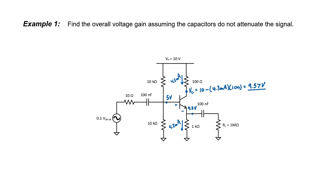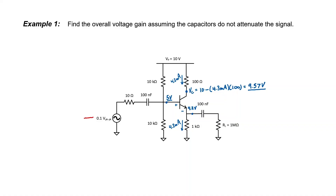Is the collector voltage always higher than the base voltage? Yes. Is the base voltage always 0.7 volts higher than the emitter? Yes. It appears this transistor is properly biased in the forward active mode. Of course, it needs to stay biased in the forward active mode as our input voltage swings high and low — let's check that now.